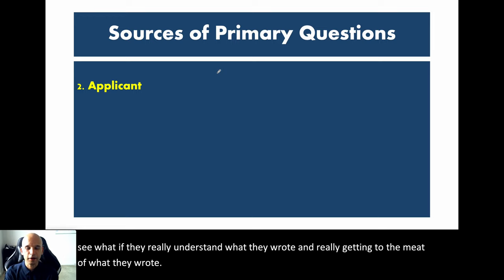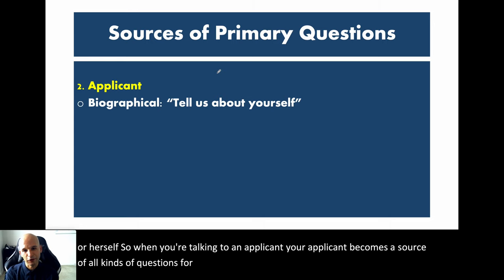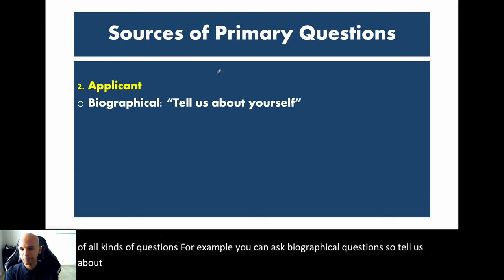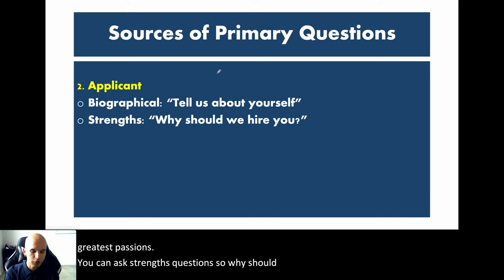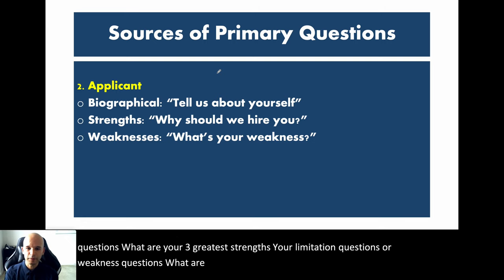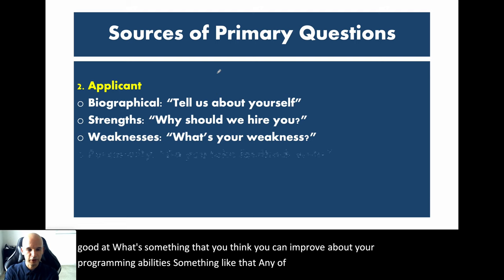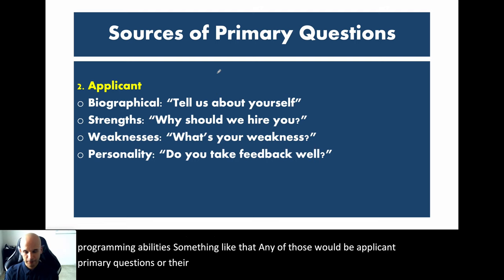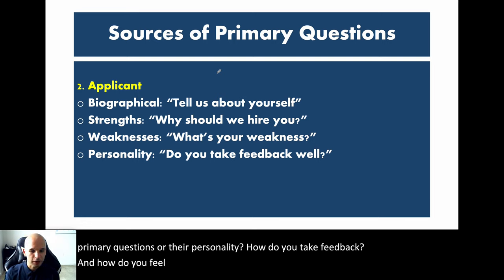The second source of primary questions is the applicant themselves. You can ask biographical questions: 'Tell us about yourself,' 'What draws you to this position,' 'What are your greatest passions?' You can ask strengths questions: 'Why should we hire you?' or 'What are your three greatest strengths?' Limitation or weakness questions: 'What are your weaknesses?' or 'What's something you think you can improve about your programming abilities?' And personality questions: 'How well do you take feedback?' or 'How do you feel about working in a fast-paced environment?'